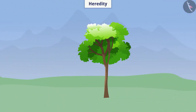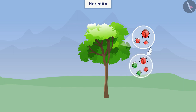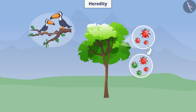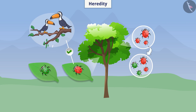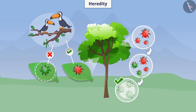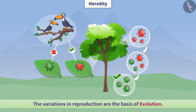Suppose there is a species of red insect on a tree. Due to accumulation of variations over generations, there is a rise of a new variety of green insects. Suppose a bird comes to live on that tree — it can easily find and eat red insects. But green insects can hide themselves in the green colour of leaves. In this way, there will be a possibility of survival of the insect species. Variations help in the survival of the species. Therefore, we can say that the variations in reproduction are the basis of evolution.